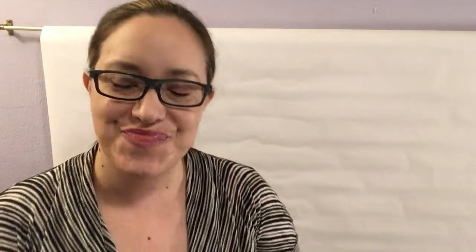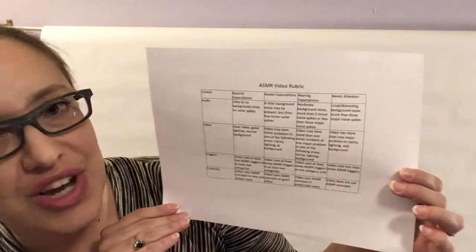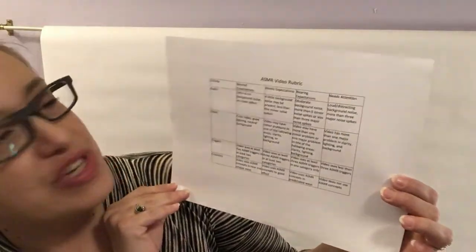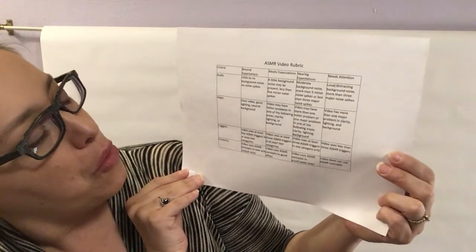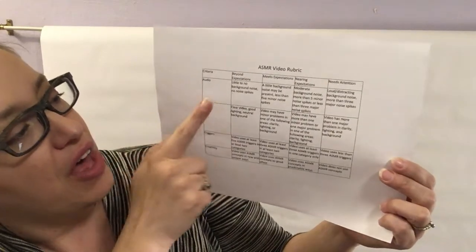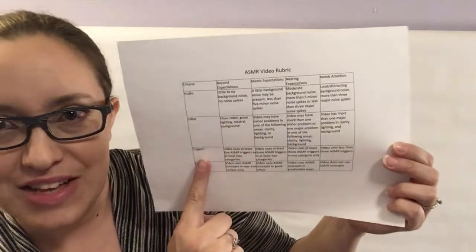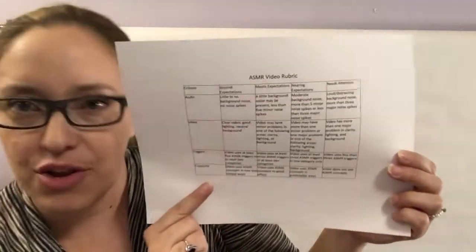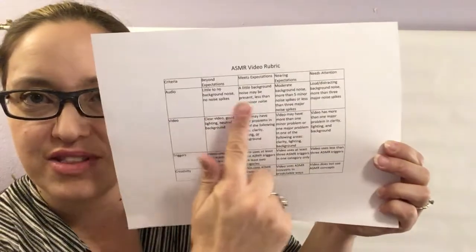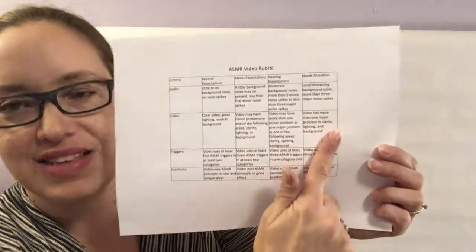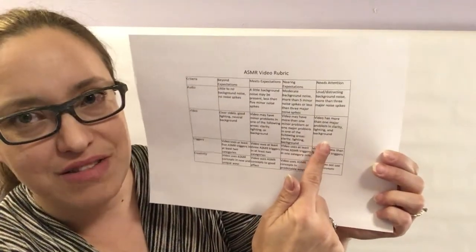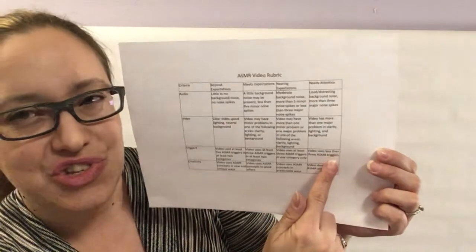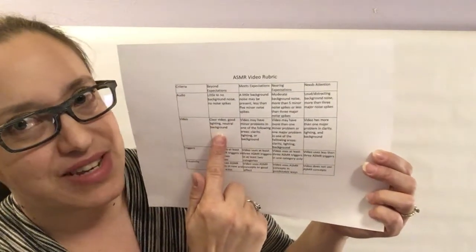So, we might have a rubric for the assignment to create an ASMR video in which we score based on audio, video, triggers, and creativity. And each level of performance has its own indicator. That way, anyone who is using this rubric should rate an assignment the same.